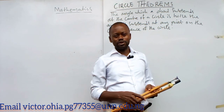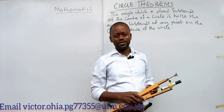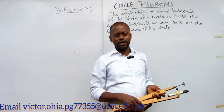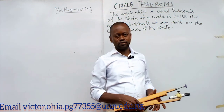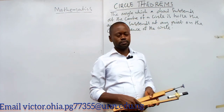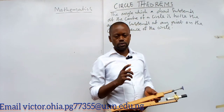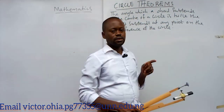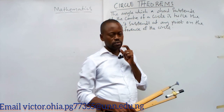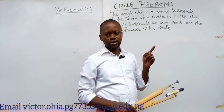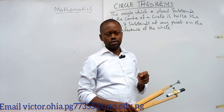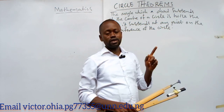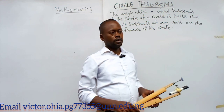Stay with us because we are going to share a lot of knowledge in this class. The first theorem we want to start with is the theorem that states: the angle which a chord subtends at the center of the circle is twice the angle which it subtends at any other point on the circumference of the circle.